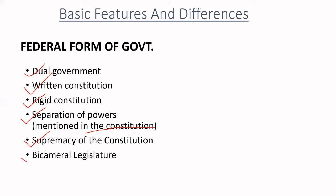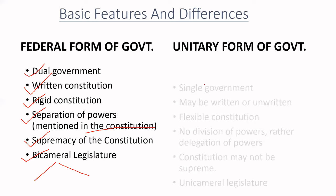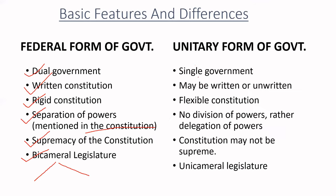There is also a bicameral form of legislature — meaning there is one center and one state. In contrast, the unitary form of government has a single central government.